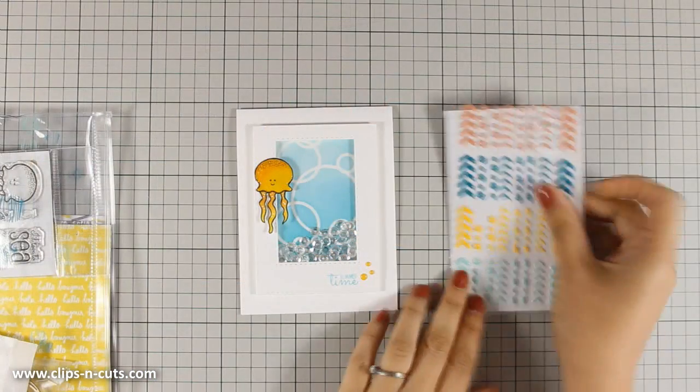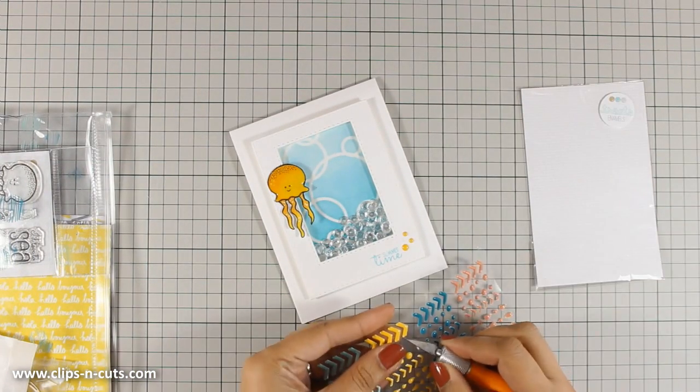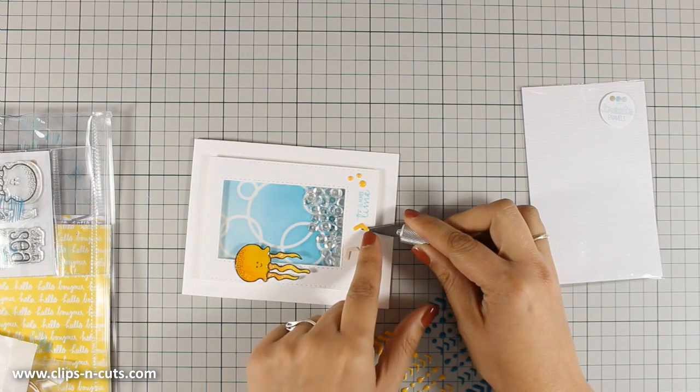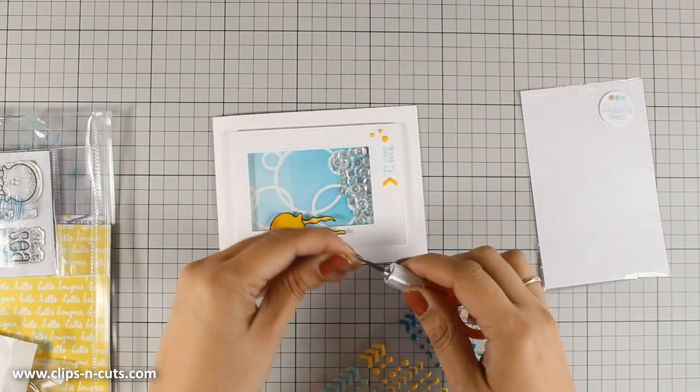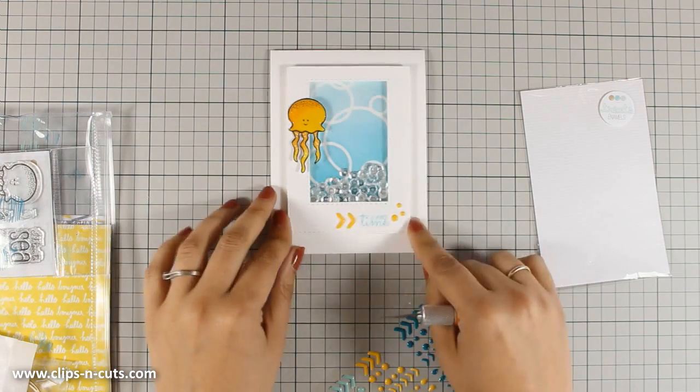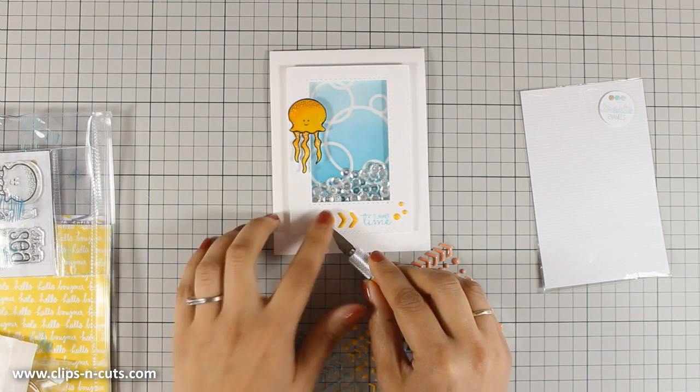To finish off the card I am going to use some of those enamel stickers. So I have already added three yellow dots and I am also going to add some arrows. I will stick five of those pointing to the sentiment and trying to make sure that they have equal distance one from the other. I am just eyeballing it but I think I did a pretty good job.